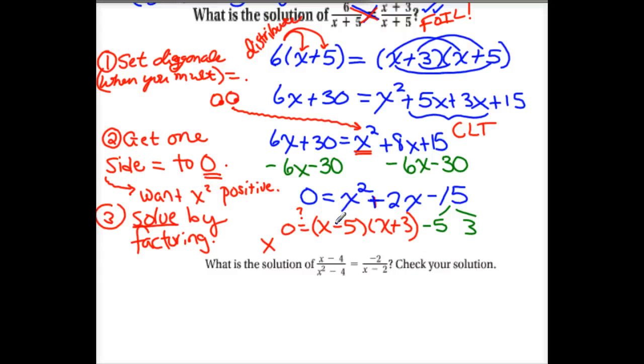Actually that should have been a plus. 8 minus 6 is positive 2. I'm not going to restart the video - we're going to fix it. Anyway, so I've got zero equals x plus 5 times x minus 3. I've got two solutions here: x equals negative 5 because negative 5 plus 5 is zero, or it could equal 3.